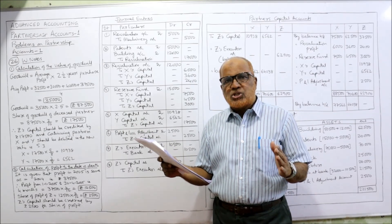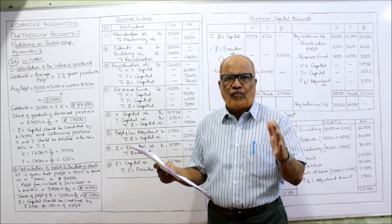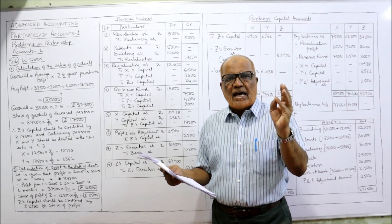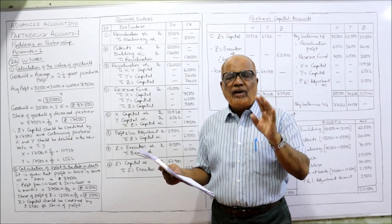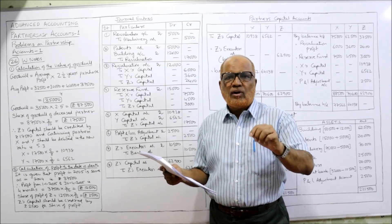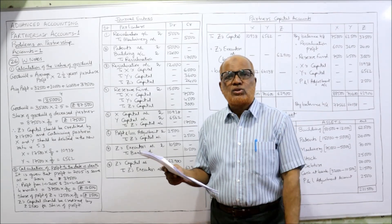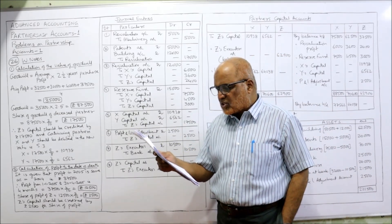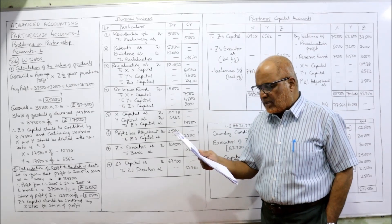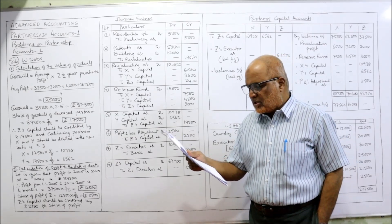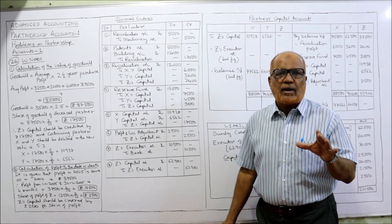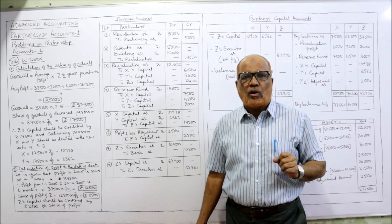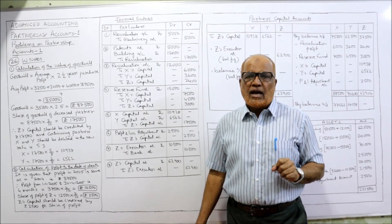Z died on 1st May 2005. The last balance sheet was prepared on 31st December 2004. From January to April — four months — we have to calculate the profit and give the share of profit to the executors of the deceased partner. Goodwill is to be valued at two and a half years' purchase of the average profit of the last four years: 2001 — 32,500; 2002 — 30,000; 2003 — 40,000; 2004 — 37,500.